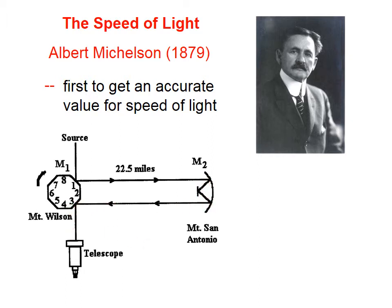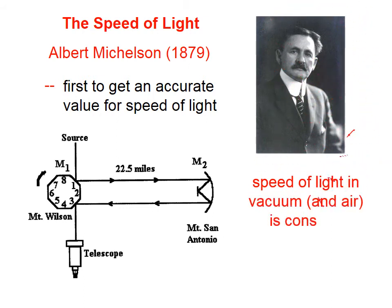The light would be scattered someplace off to the right or off to the left. So, based on the rate of rotation of this series of mirrors and the distance, Michelson was able to determine the value for the speed of light. He got within 98% or 99% of our current accepted value, which is 3.00 times 10 to the 8th meters per second.